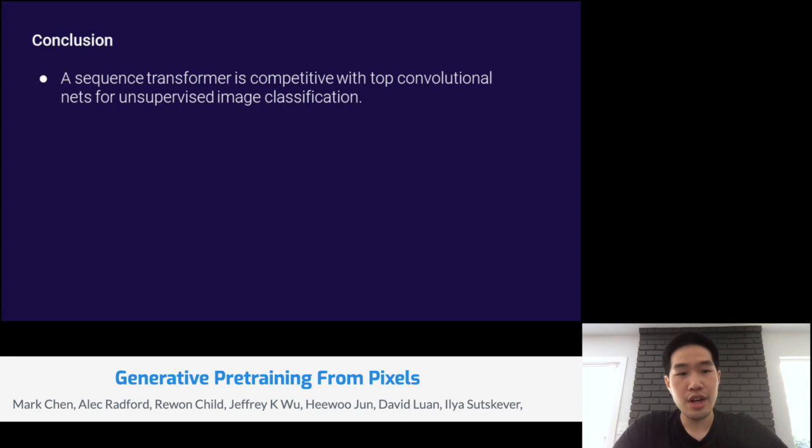In conclusion, a sequence transformer is competitive with top convolutional neural nets for unsupervised image classification. Simply predicting pixels learns state-of-the-art representations for many low-resolution datasets. In high-resolution settings, our approach is also very competitive with other self-supervised results on ImageNet. For more details, please refer to our paper. Thank you for listening to my talk.